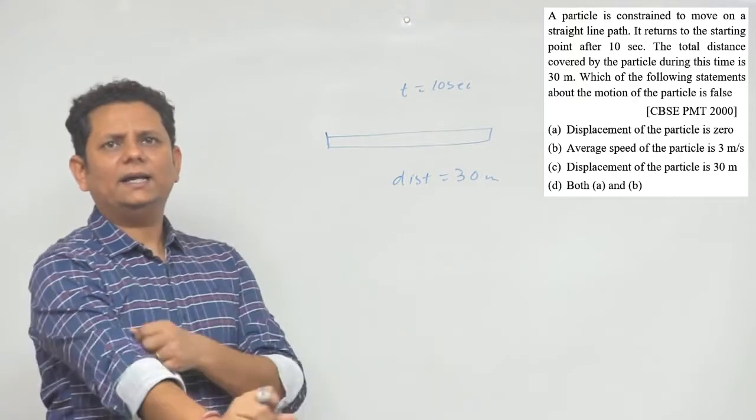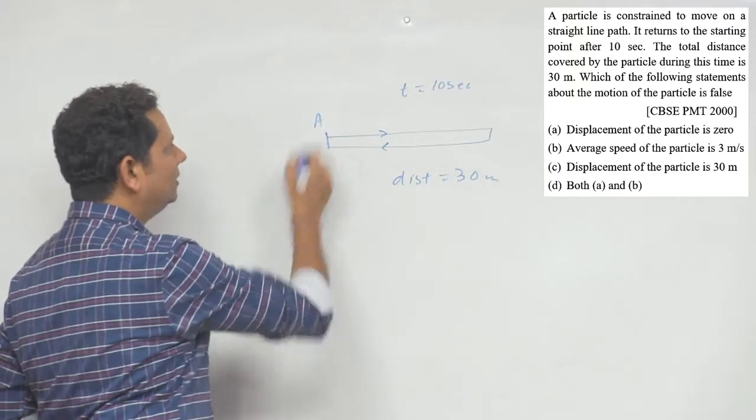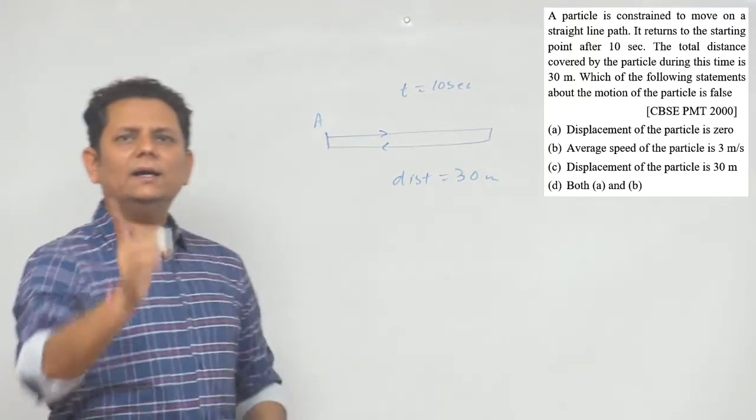Sawal yeh hai ki hame galat statement batana hai. To 4 statement check karte hain. Pehla hai displacement of the particle is zero. Ab kyunki particle ja ke waapis apni jagah aa gaya, original location per laut ke aaya, to displacement to zero ho gaya. To pehla statement sahi hai.